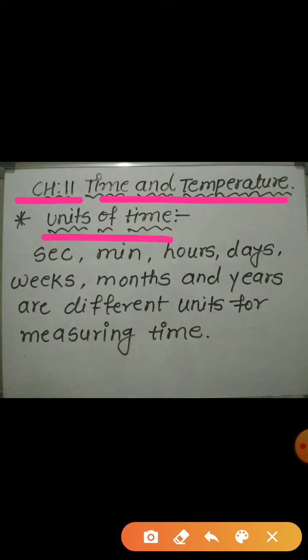Now let's see which are the units of time: second, minute, hours, days, weeks, months, and years. These are the different units for measuring time.